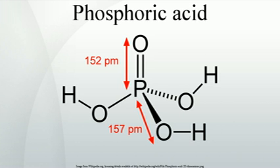Wet process phosphoric acid is prepared by adding sulfuric acid to tricalcium phosphate rock, typically found in nature as apatite. The initial phosphoric acid solution may contain 23–33% P2O5, but can be concentrated by evaporation of water to produce commercial or merchant grade phosphoric acid, which contains about 54% P2O5. Further evaporation of water yields insoluble calcium sulfate, which is filtered and removed as phosphogypsum.